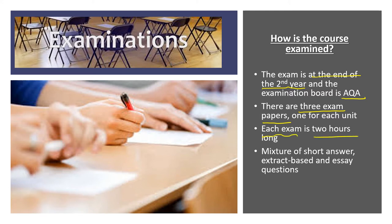Each exam will be two hours. In that two hours, you'll be expected to do a mixture of short answer questions — these are nine-mark questions, with three per paper. Then there's section B, a longer extract-based question worth 25 marks, where you'll be given a piece of political writing and asked to analyse and evaluate the arguments in it. And lastly, section C has 25-mark essay questions where you pick one from a choice of two. Don't be daunted by that — we will do a lot of preparation throughout the two years.